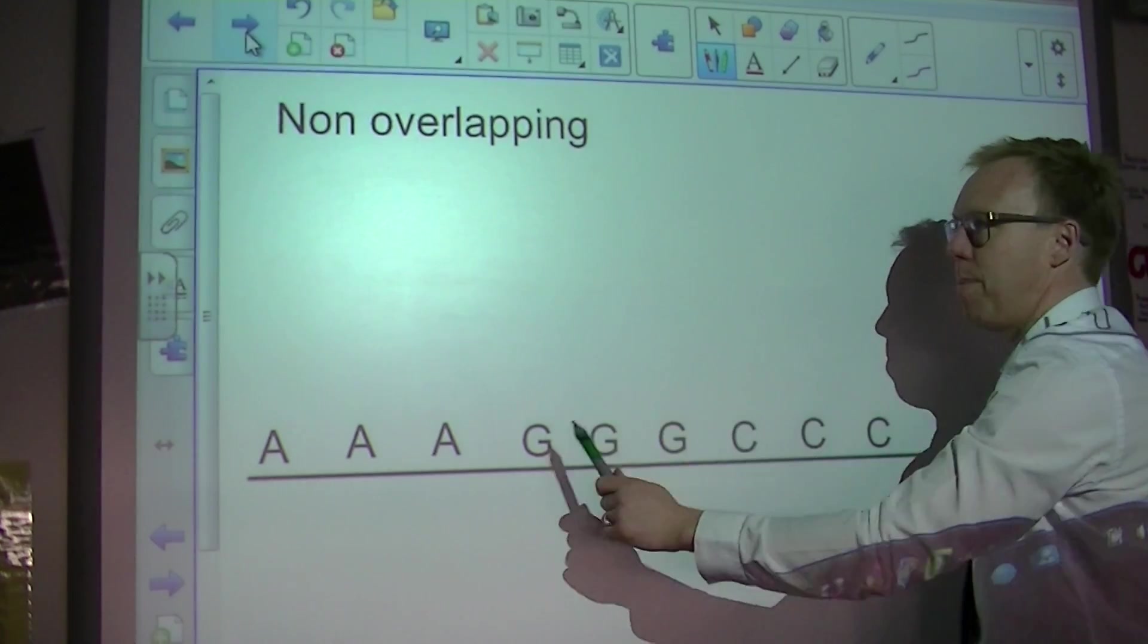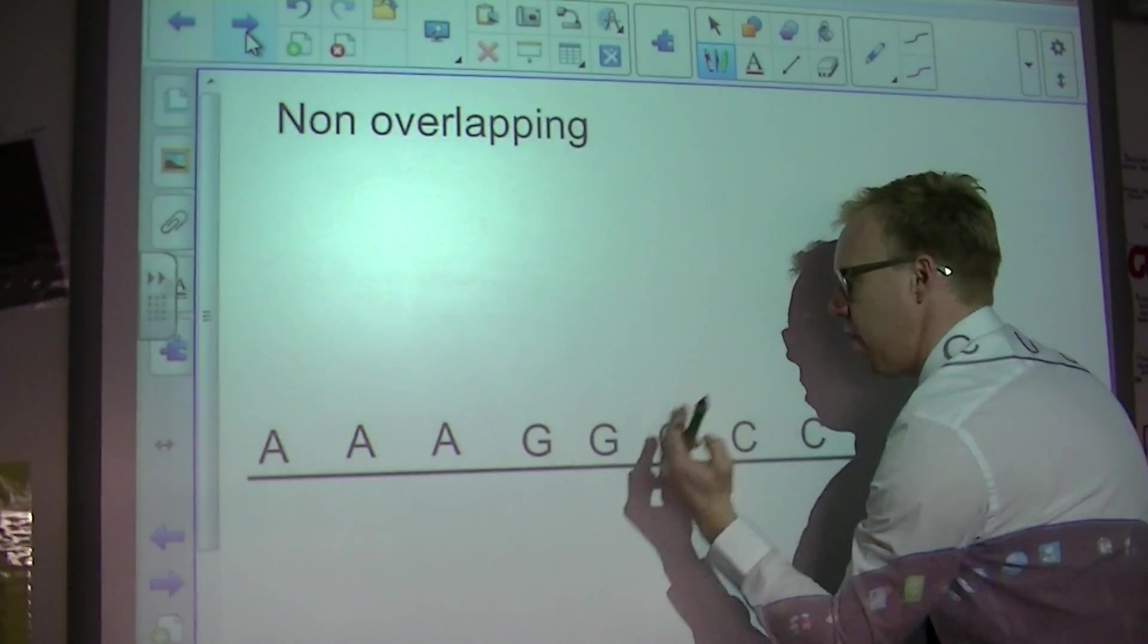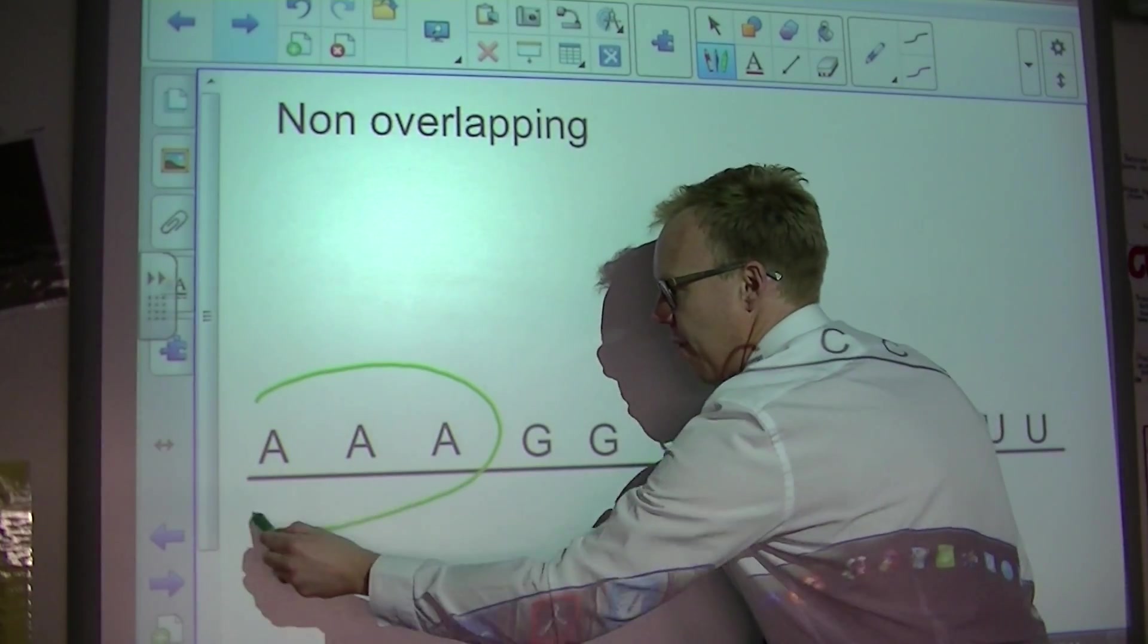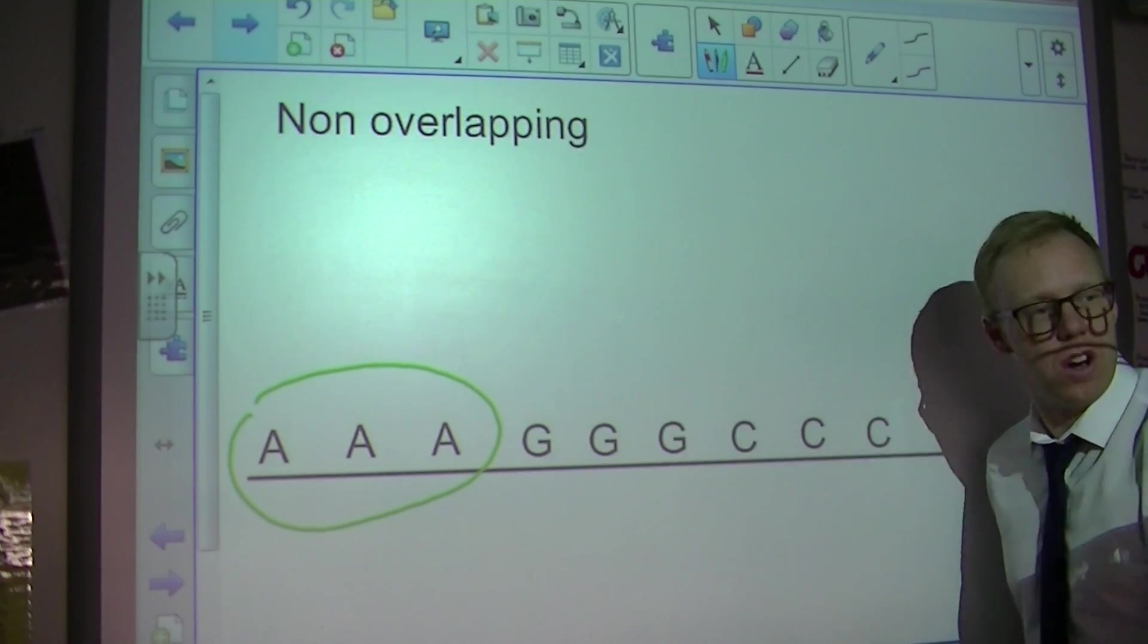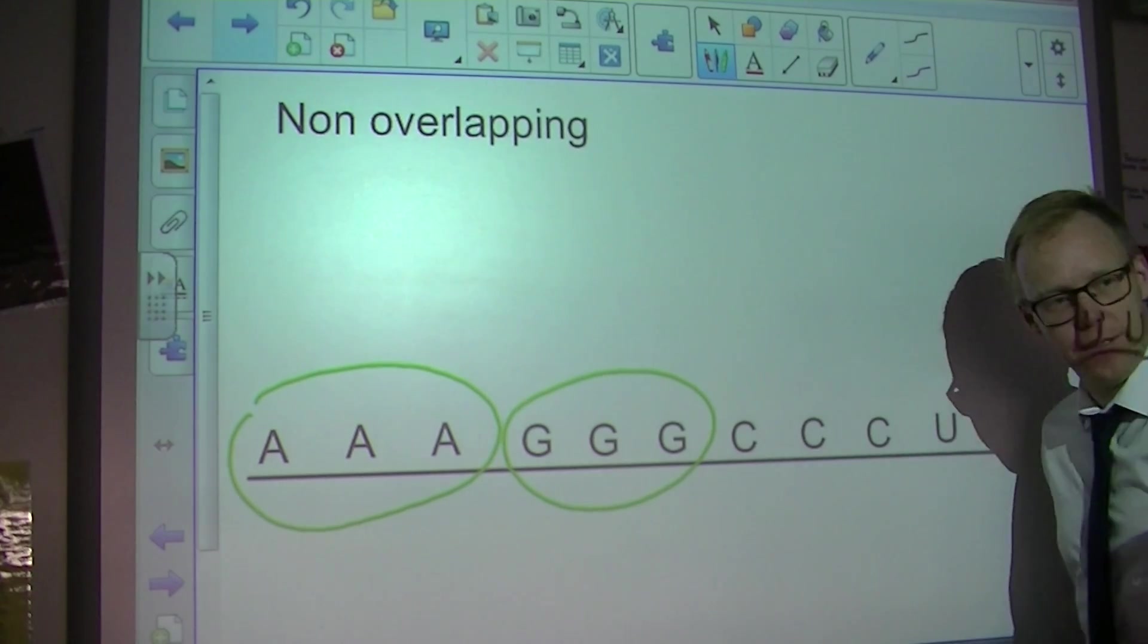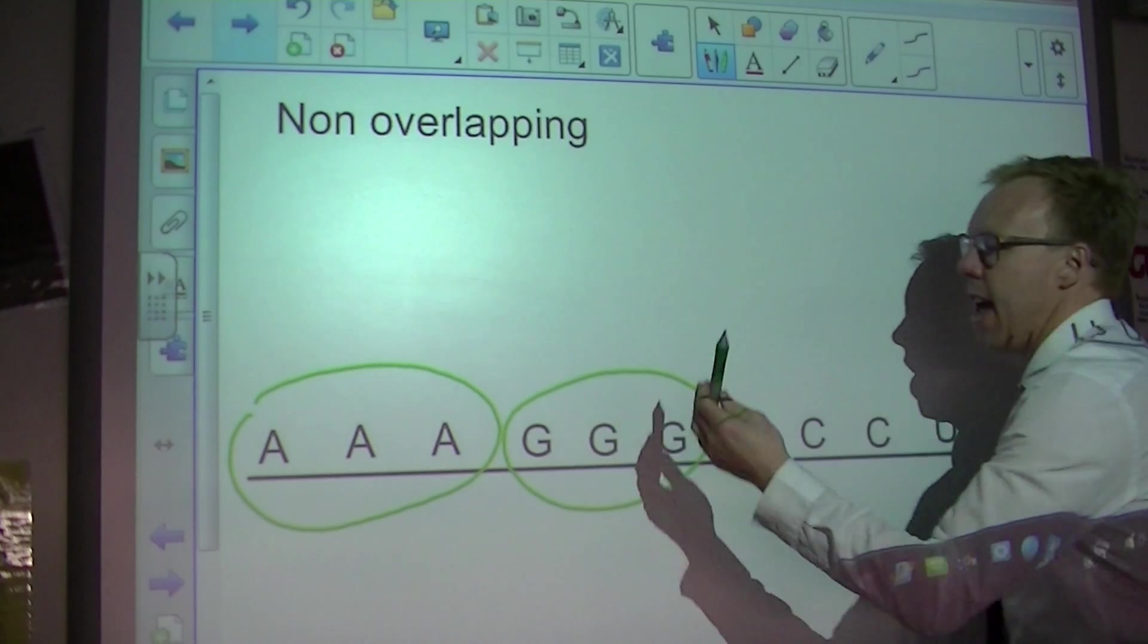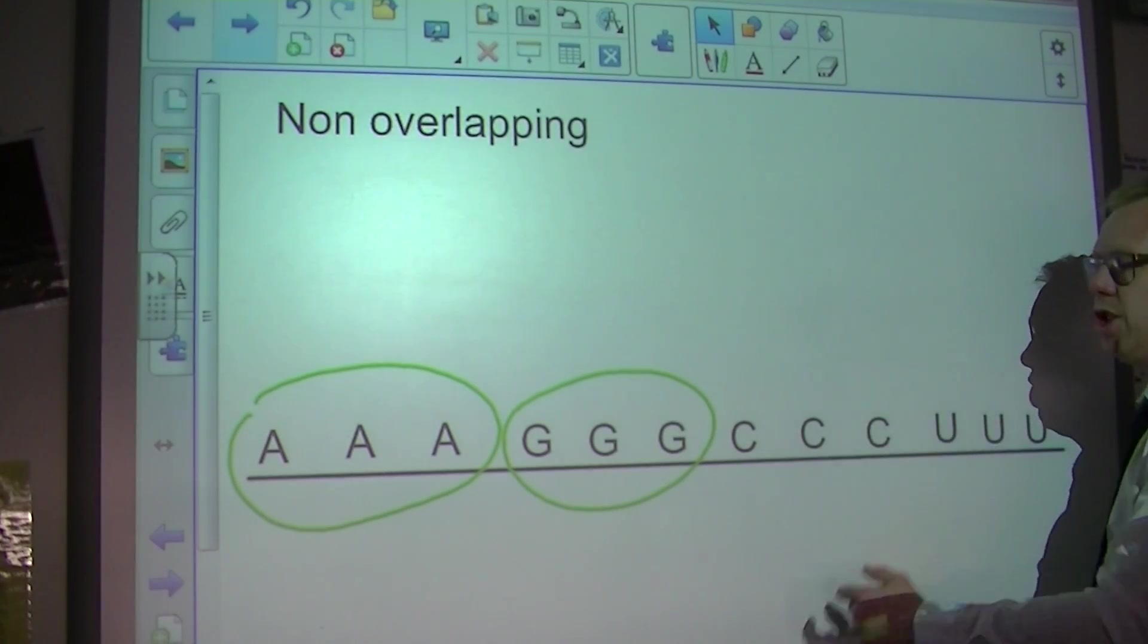The concept of non-overlapping refers to the fact that the code is read in threes. So when the ribosome moves along this code, it reads them in sections of three. So it reads A, A, A, and then the next code that it reads is G, G, G. Non-overlapping means it reads those sets of codes, A, A, A, G, G, G.